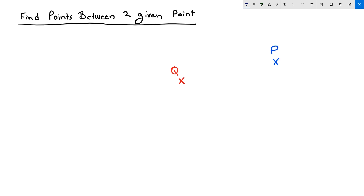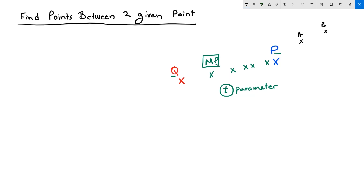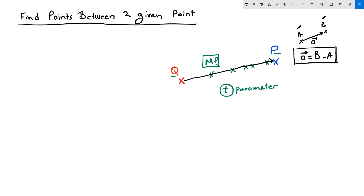Given point Q and point P, how can we find all possible points M using parameter T? From vector subtractions, we know that given two points A and B, we can find a vector going from A to B. Vector A equals B minus A — this is a quick reminder of vector subtraction. Knowing that equation, we can define vector A going from Q to point P by subtracting P minus Q.